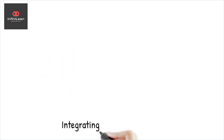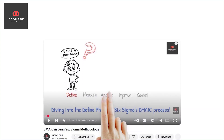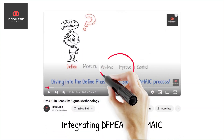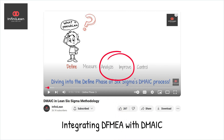So, how is DFMEA integrated with Six Sigma? Well, it complements Six Sigma's DMAIC process — define, measure, analyze, improve, and control — by adding a layer of design-focused scrutiny. Teams can incorporate DFMEA findings into the analyze and improve phases to optimize design and manufacturing processes.